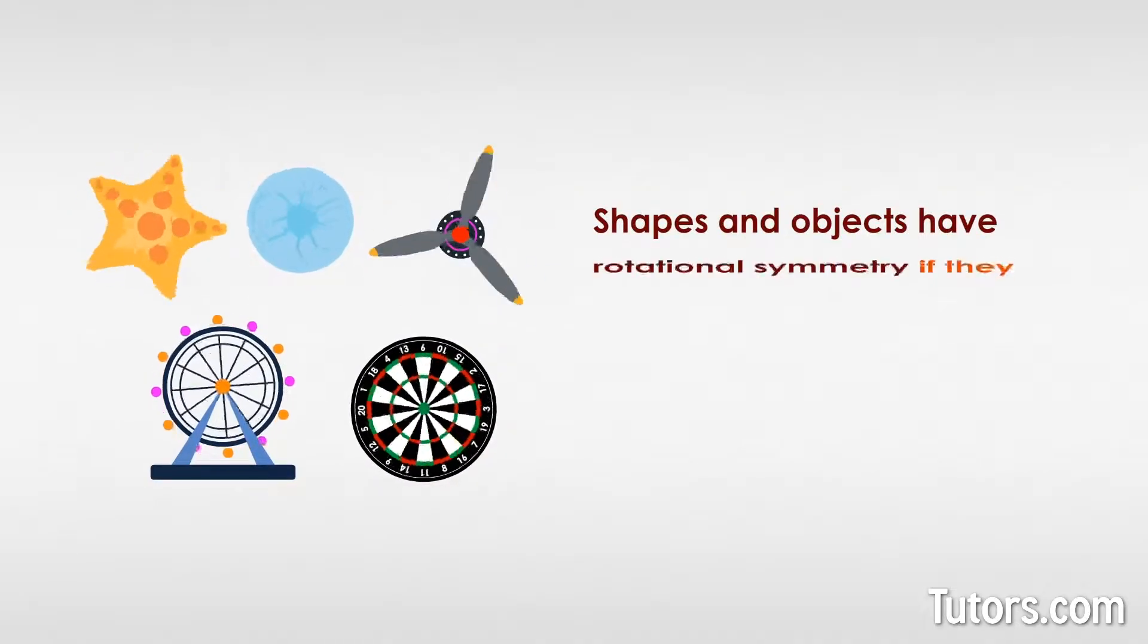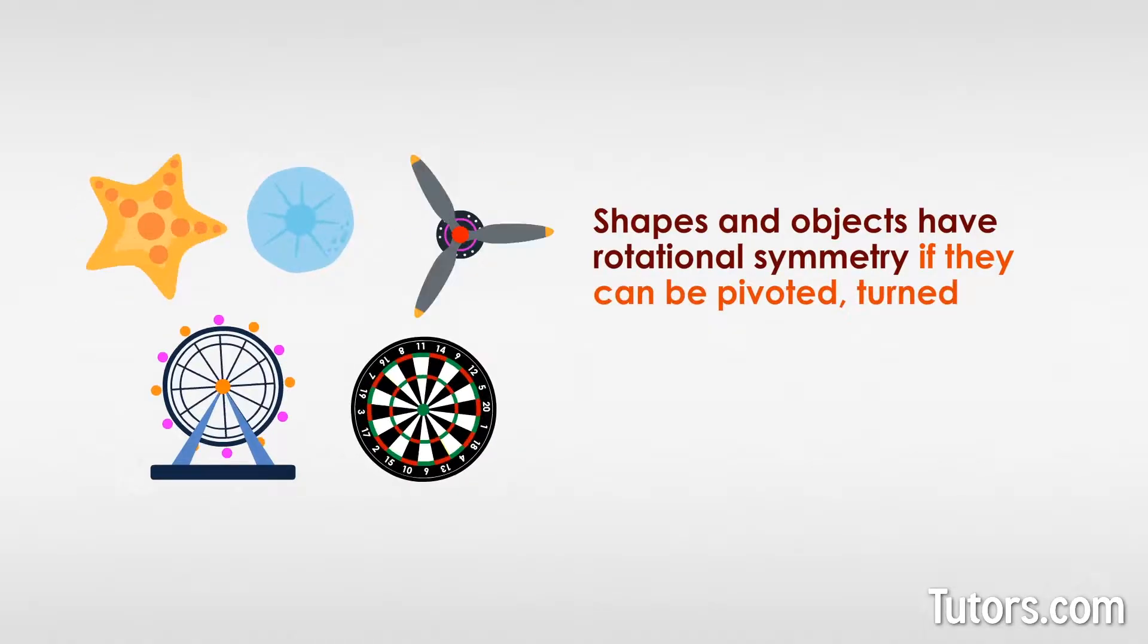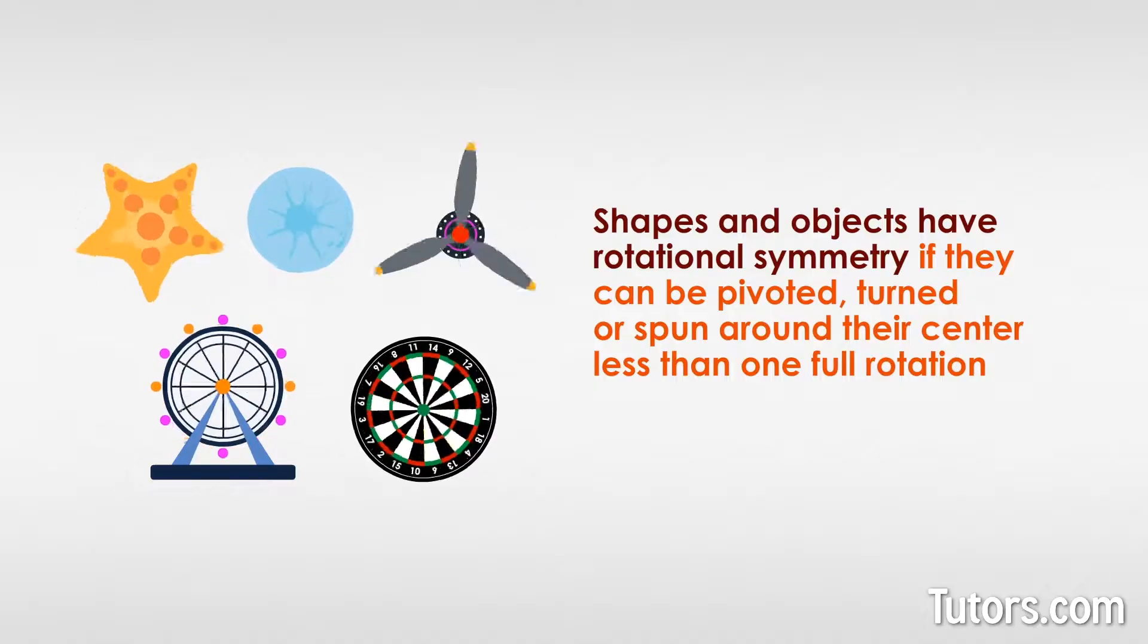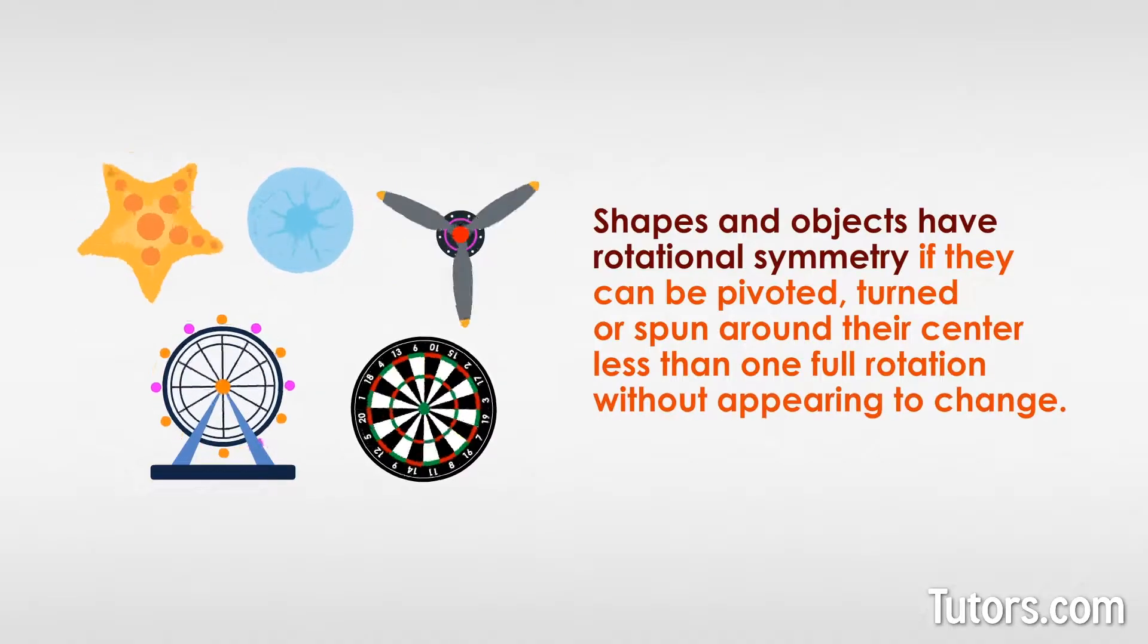Shapes and objects have rotational symmetry if they can be pivoted, turned, or spun around their center less than one full rotation without appearing to change.